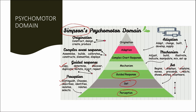Ascending above, we reach the mechanism stage where we adjust, build, illustrate, manipulate, mix, and set up new things. Then we reach the complex overt response stage where we assemble, build, calibrate, construct, and dismantle. The next stage is adaptation, where we adapt the same psychomotor skill into our own settings, change according to our needs, build, develop, and apply.